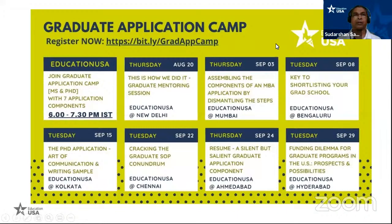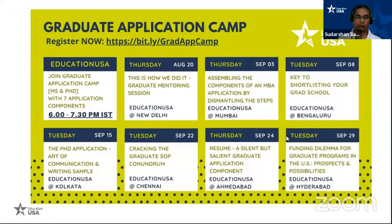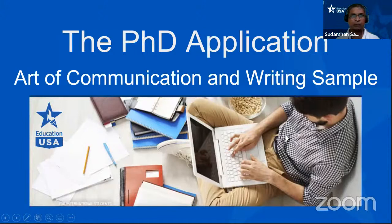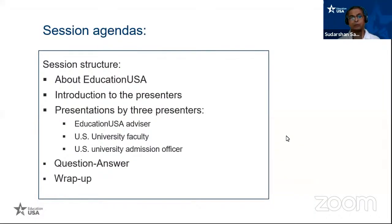We are very glad to inform you that we are conducting a series of webinars — a Graduate Application Camp which started on August 20. We have already presented three webinars, and today, September 15, we have the webinar on PhD application and art of communications. There are three more webinars coming in the next couple of weeks. Today's topic is the PhD Application: Art of Communication and Writing.